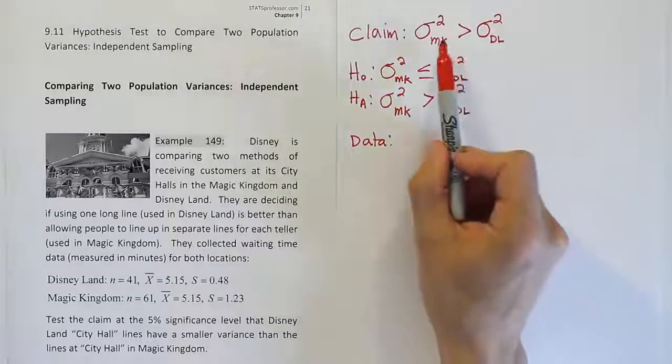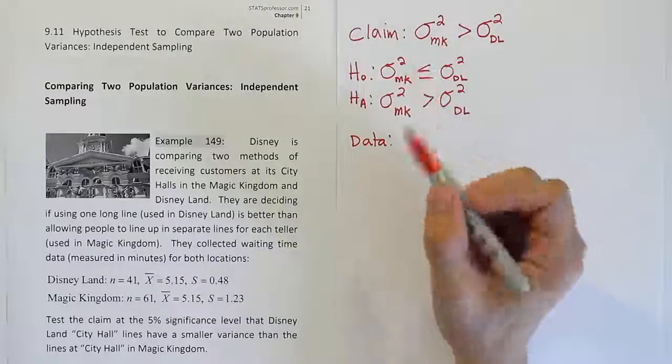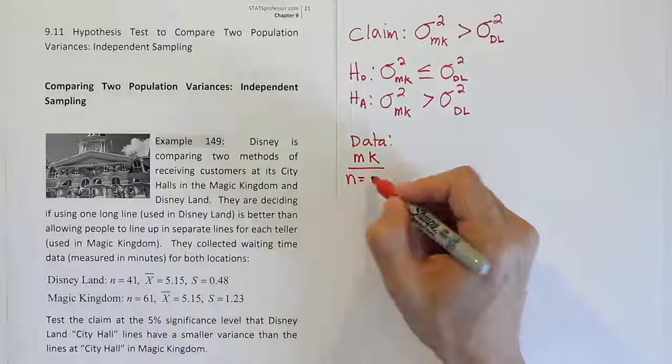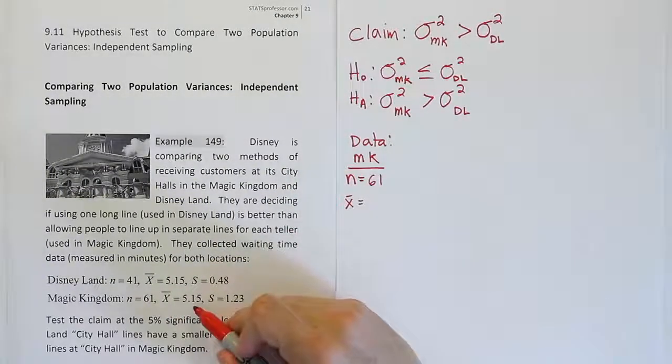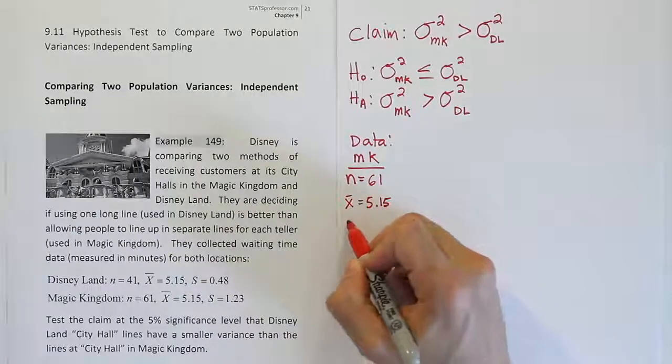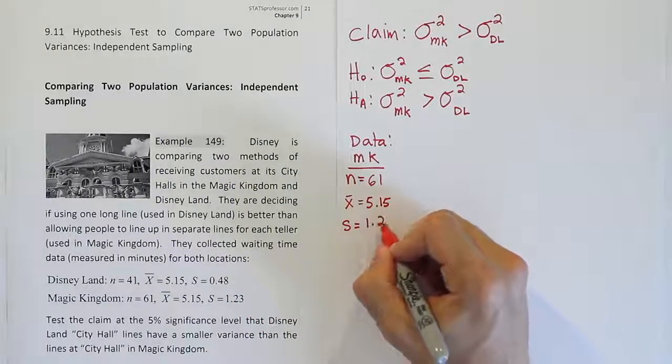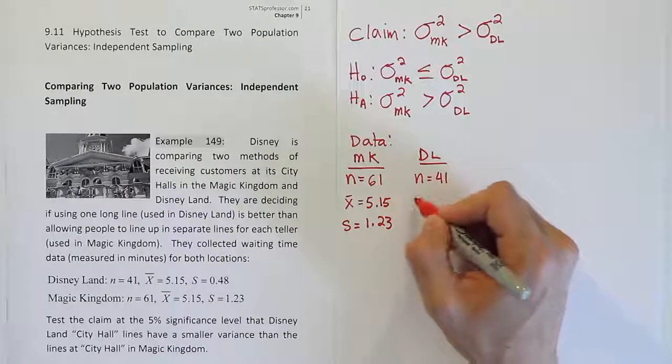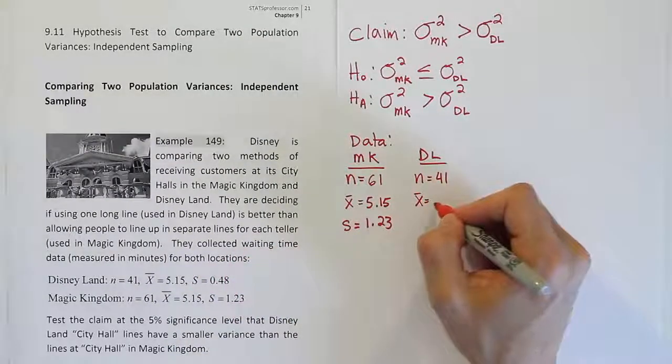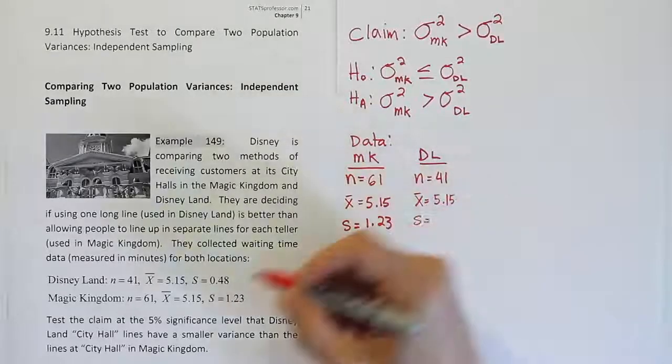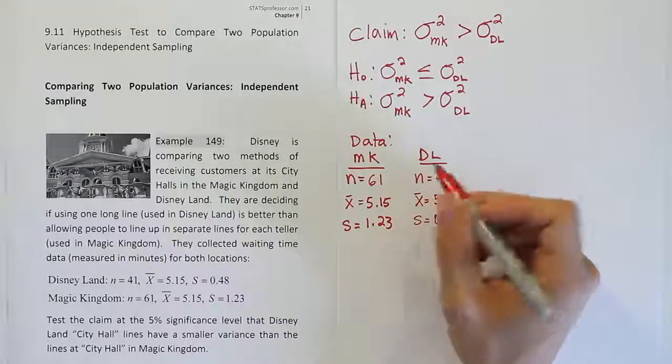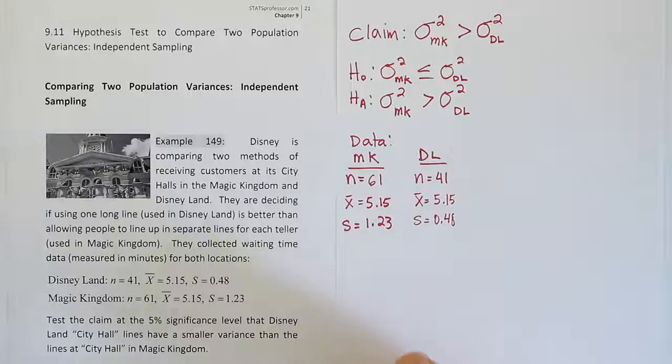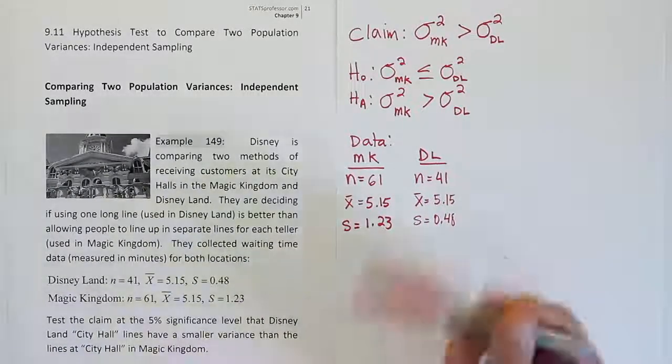So there are my two hypotheses. I have my claim. Now we get the data. The data is already laid out for us nice and neat, so let's just copy it down. We're going to be consistent and make the Magic Kingdom group first. According to the problem, Magic Kingdom has n=61 as its sample size, sample mean is 5.15, and standard deviation is 1.23. Then Disneyland has n=41, sample mean was 5.15, and standard deviation was 0.48. The sample means are the same, so the issue then is the variance the same.